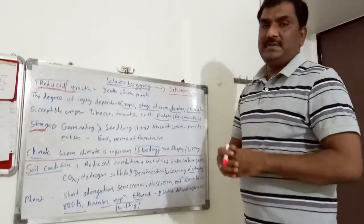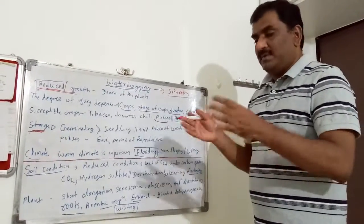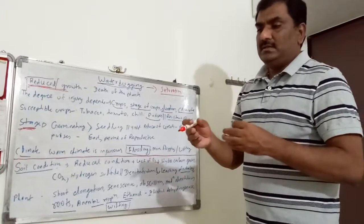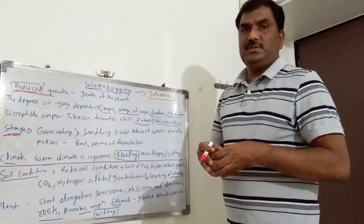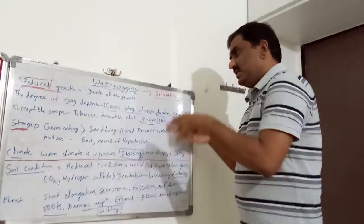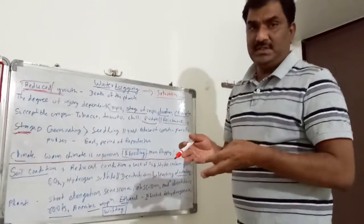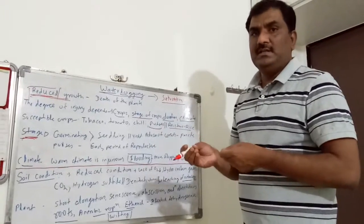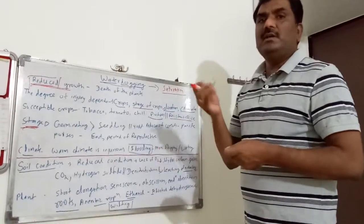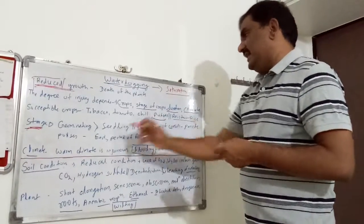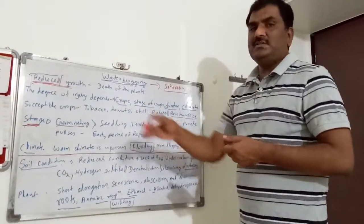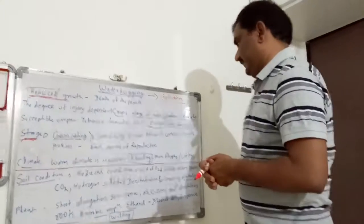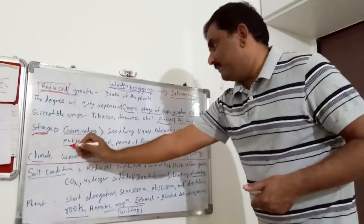Stages are also an important point. Different stages include germination, seedling, and reproduction. Among these, the most susceptible stage is germination, because the seed is entirely dependent upon oxygen or air around it at the time of germination. There is no root to provide oxygen for respiration. In germination, the seed depends upon the soil for availability of air, so if no oxygen is present, germination will not occur.